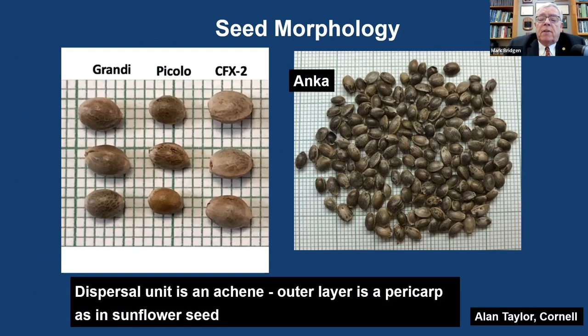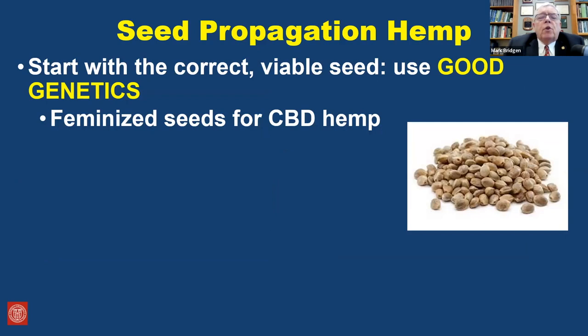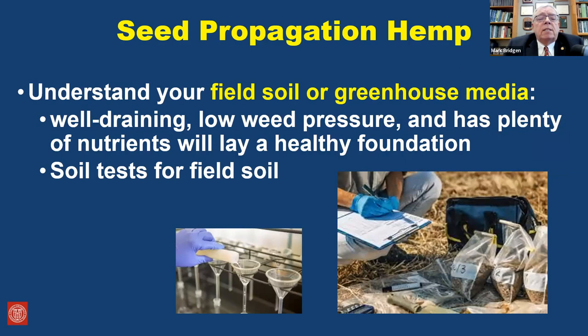Dr. Alan Taylor at Cornell University in Geneva has been doing a lot of work with hemp seeds. Hemp seeds are very similar to a sunflower seed. For seed propagation, start with good, healthy, viable seed with good genetics. You may be interested in feminized seeds if you want only female plants. The growing media — whether a field or greenhouse — should be well-drained with low weed pressure and plenty of nutrients available for plants once they germinate.